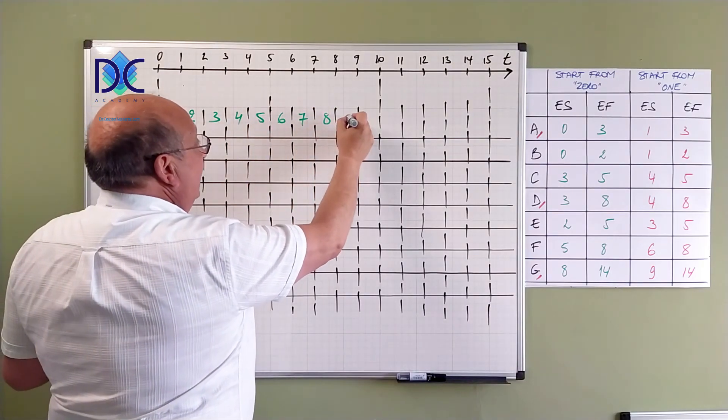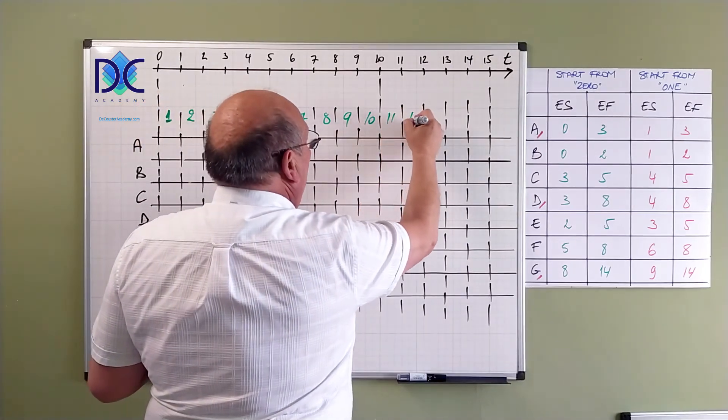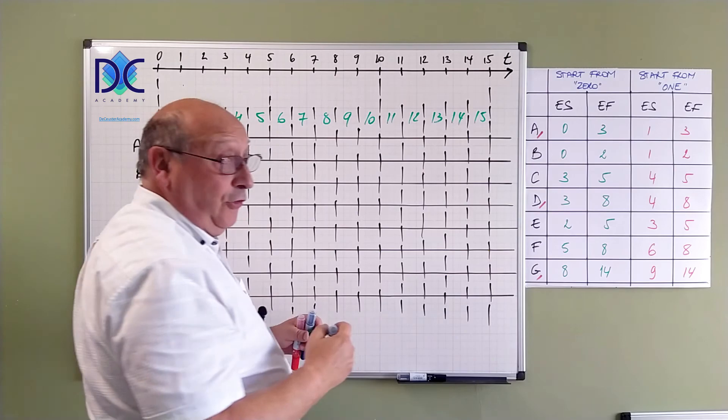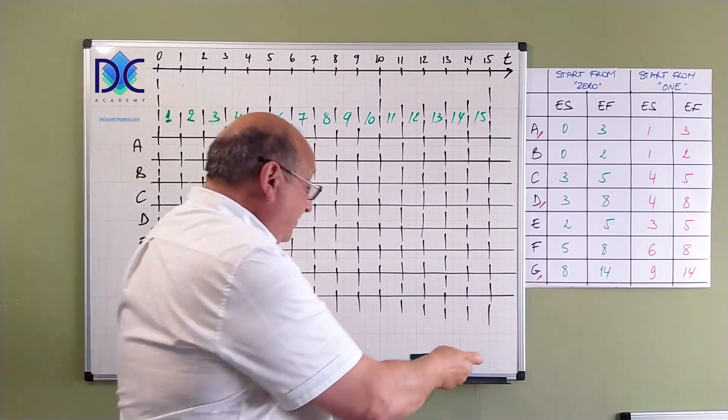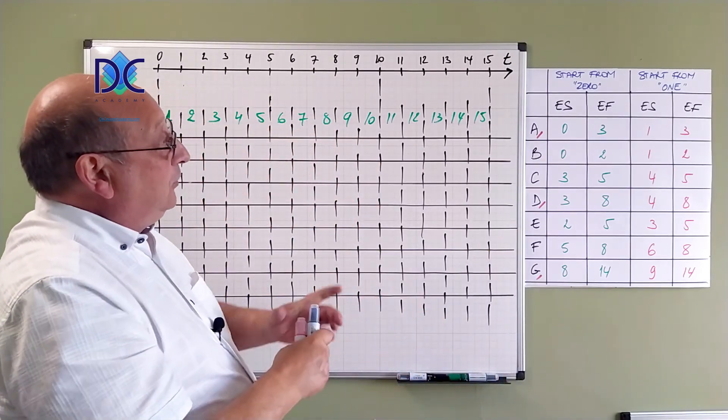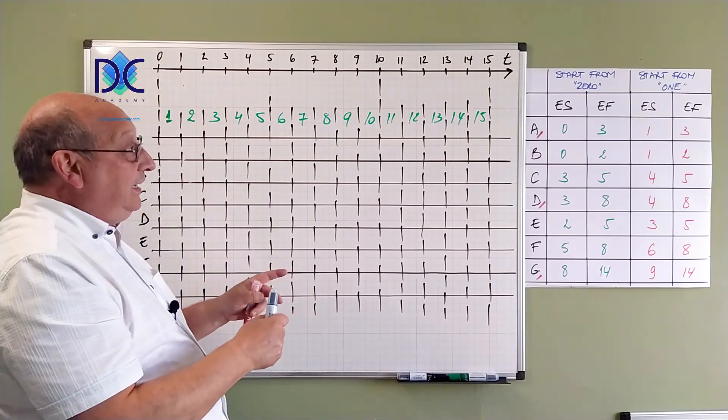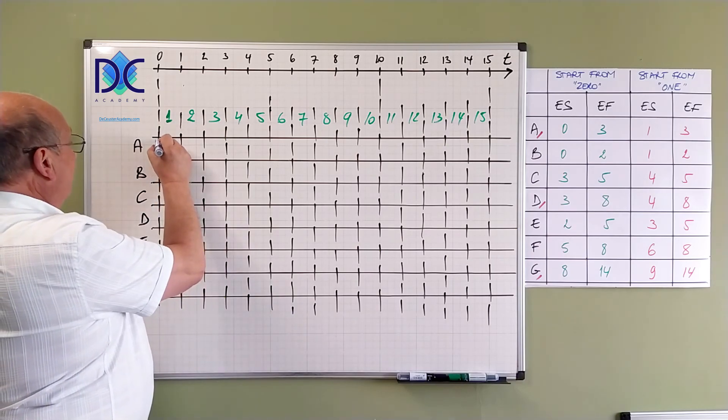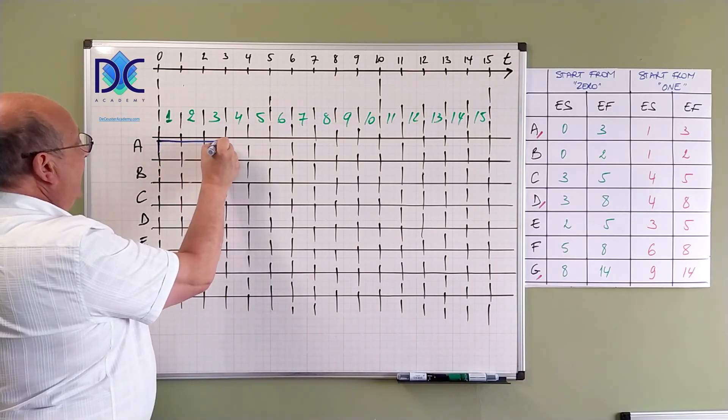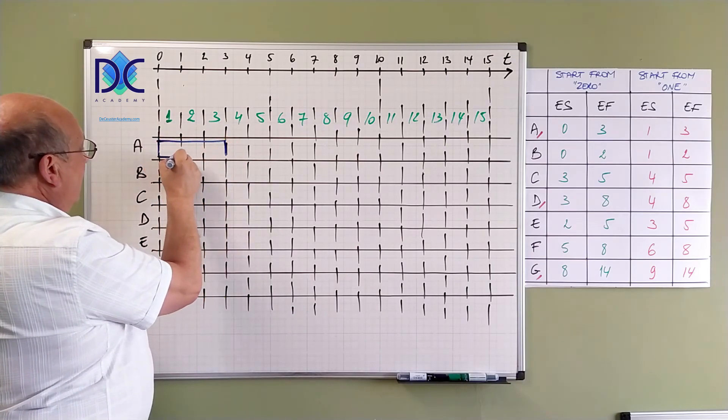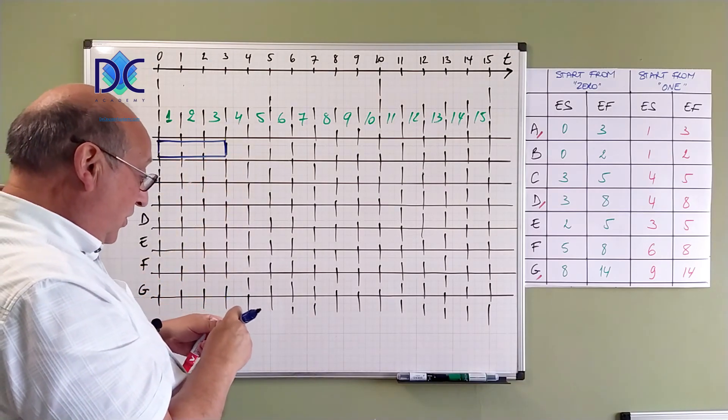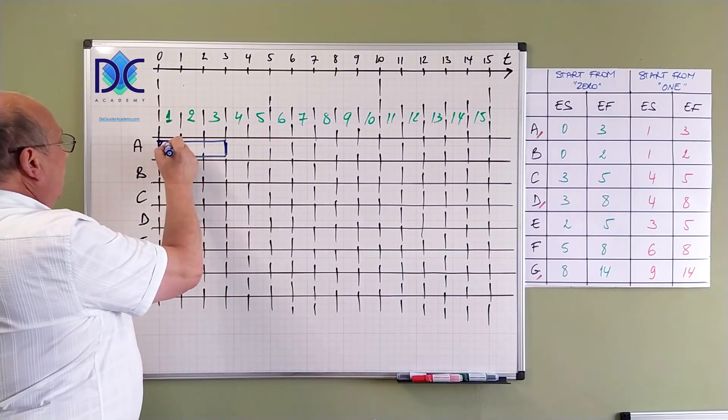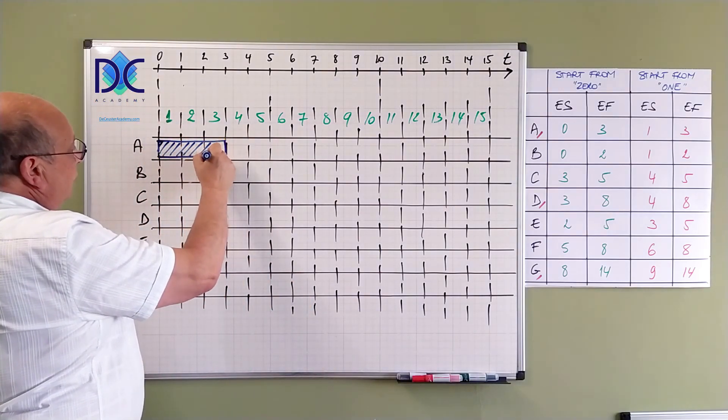7, 8, 9, 10 and I continue 13, 14 and 15 but we don't need 15. Basically, when we look at early start and early finish for activity A, we use the coordinates. So we start from 0 up till 3. A takes 3 periods and I should have drawn this in red because it's on the critical path. Let's color this to show you that it's critical.